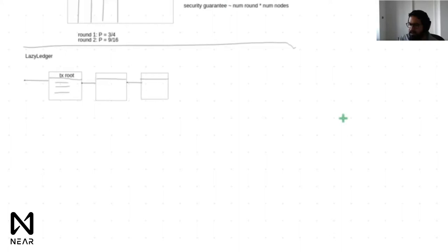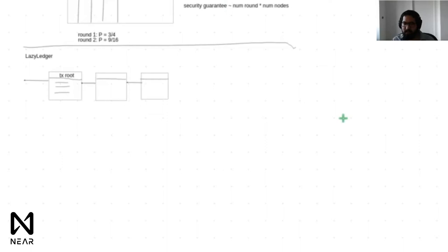In order to solve double spending, do we need to exclude invalid transactions — by invalid I mean a transaction that double spends a UTXO or spends an invalid nonce? No, we don't. We could have a blockchain where those transactions are still in the blocks and we just ignore them. There's no such concept as an invalid transaction. The application running on top decides its own validity rules. The consensus process is just ordering zeros and ones, and this means the blockchain no longer has to do execution.